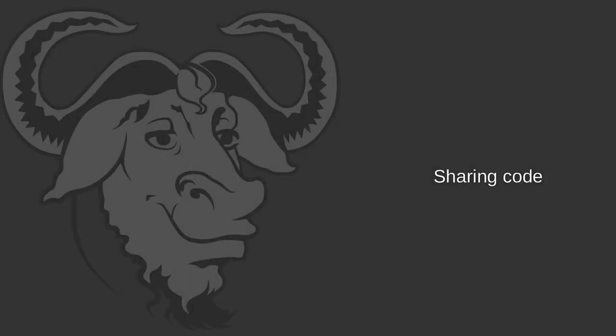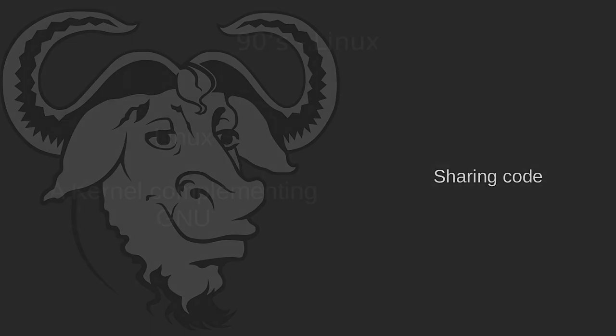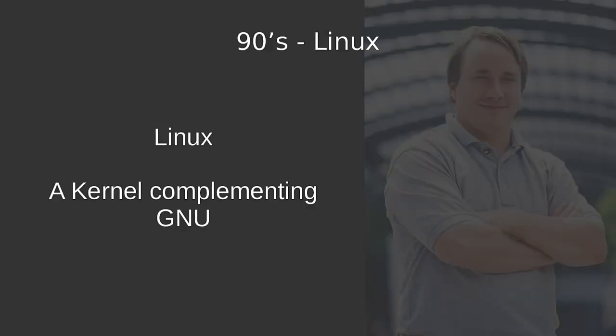It's all about sharing code. Going back to the 90s, there was something called Linux that entered the arena, made by a Finnish guy called Linus Torvalds. He wrote a kernel that complemented the GNU system that Richard Stallman set out to develop, and they fit perfectly. Linus used GPLv2, a license which we'll check into a bit later. And all of a sudden, we had a complete operating system.